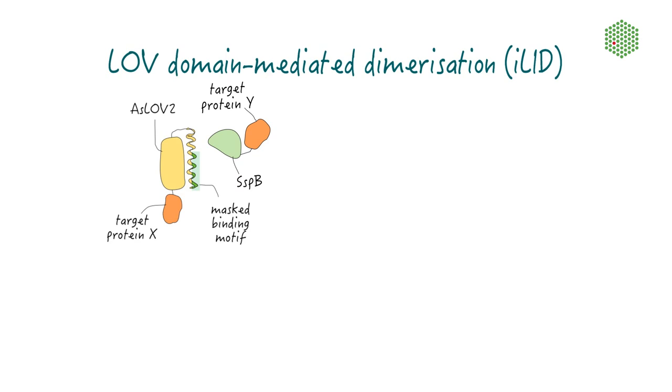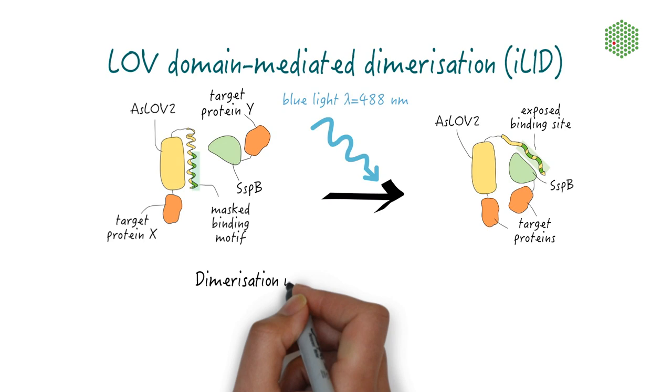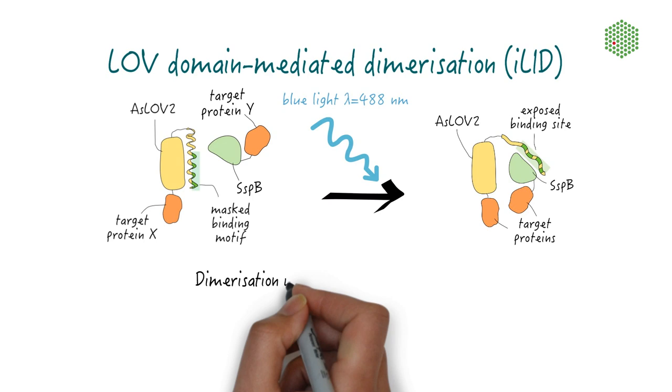In contrast to the other systems, the ILID system is an engineered dimerization system which exploits the ability of ASLOV2 to unfold upon light exposure. This causes unmasking of a hidden binding site of a protein called SSPB which can be tagged to any given protein of interest. Similar LOV domain-based heterodimerization systems include the magnet, the tulip and the LOV trap module. Homo-dimerization systems such as Vivid also exist and can be used for example to cluster receptor tyrosine kinases and activate cell signaling.